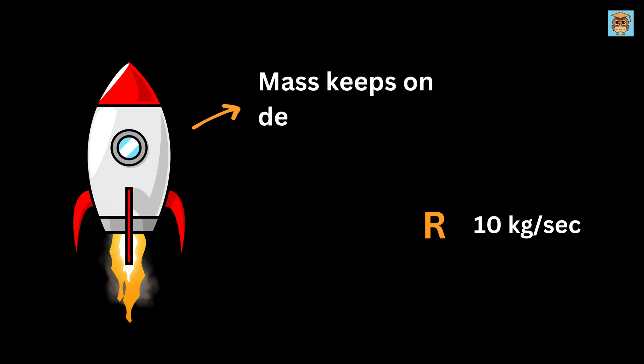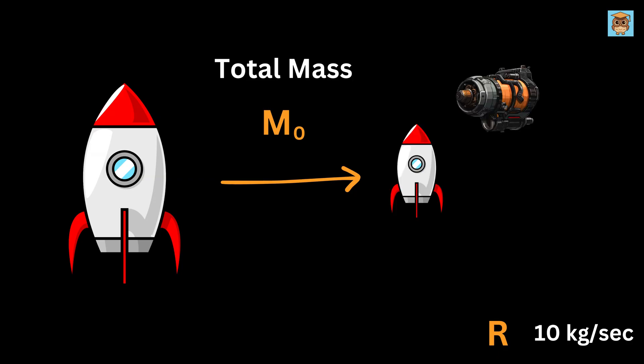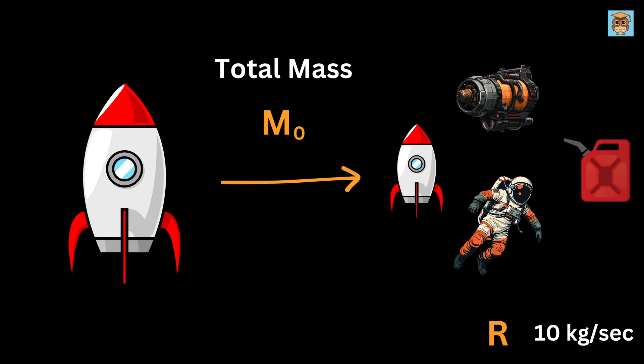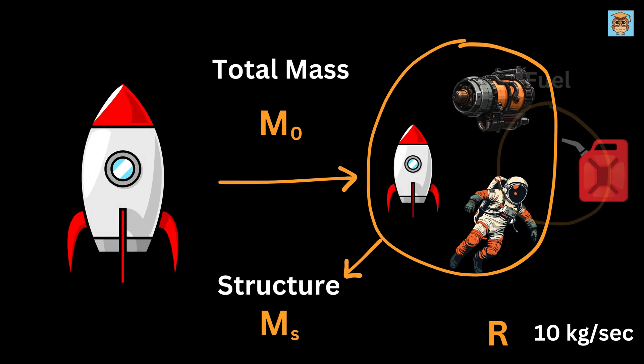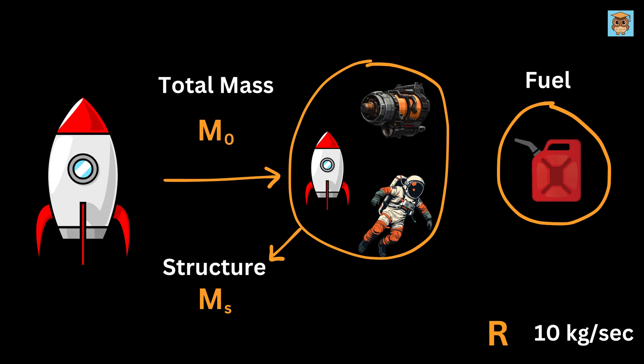Because the rocket is losing fuel, its mass keeps decreasing as time passes. At the start, the rocket has a total mass called M0. Think of this as everything: the rocket's body, its engines, whatever it's carrying like astronauts or satellites, plus all the fuel. The structure part or Ms is all the stuff that doesn't burn, like the metal body, the engines, and whatever the rocket's carrying. This Ms stays the same the whole time. The fuel part is what gets used up.